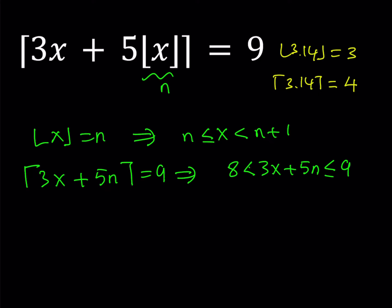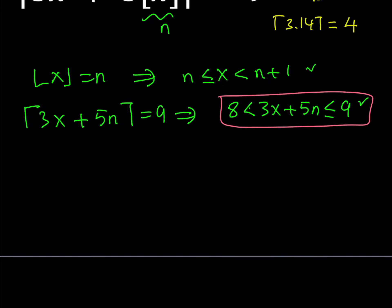Now we have two inequalities. Let's work each one. I'm going to start with this one. If you subtract 5n, you should be getting this. Let's divide everything by 3 because 3 is a positive quantity, so the inequality would not change.